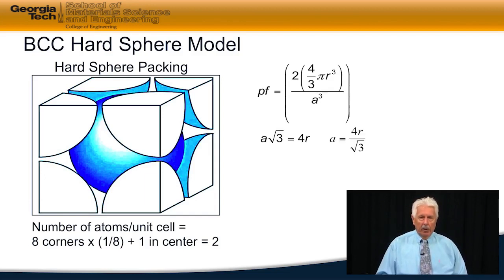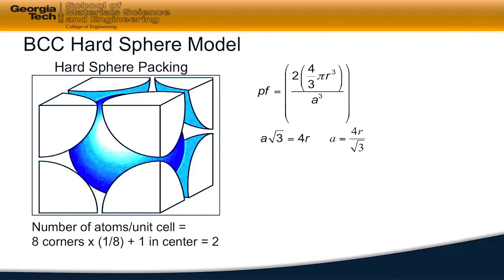Therefore, A is equal to 4R over the square root of 3. If we substitute R for A in the denominator, we find that we develop a packing factor of 0.68.